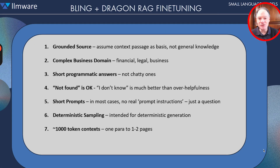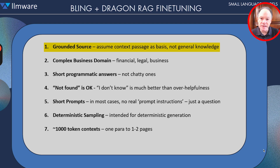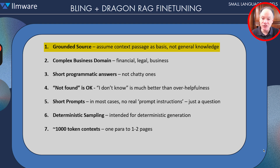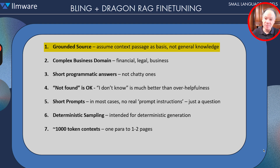Our fine-tuning regime is really grounded in the following principles. The first is that every single prompt is a grounded source. What we are assuming and fine-tuning the model to do is to read some context passage as an integrated part of that prompt, rather than relying on general knowledge. We actually do not want our small specialized models in fact-based contexts to be relying on general knowledge.